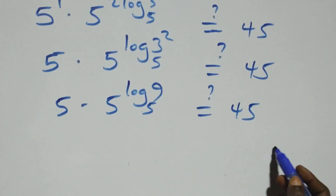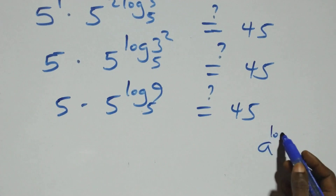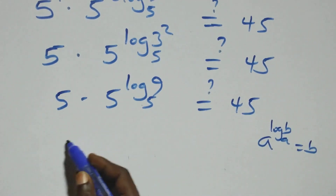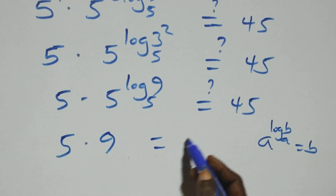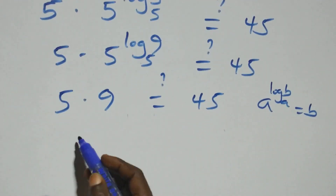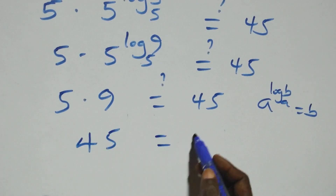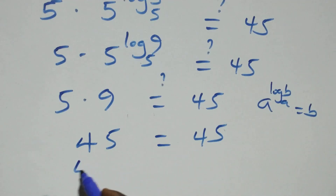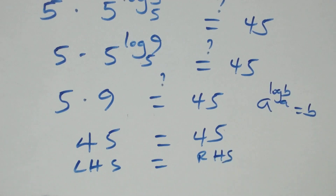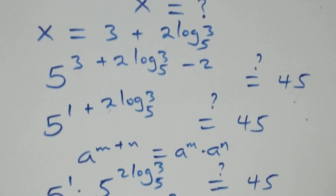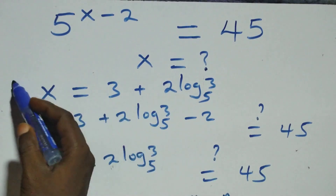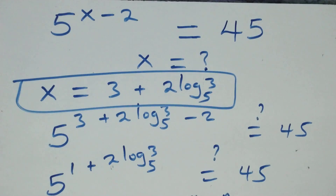This follows the rule: when we have a raised to power log b to base a, this equals b. So 5 raised to power log₅9 equals 9. We have 5 times 9, which equals 45. And of course 5 times 9 gives us 45, which equals 45 on the right-hand side — left-hand side equals right-hand side. Therefore we conclude that x equals to 3 plus 2 log₅3 satisfies the given problem. Thank you for watching.